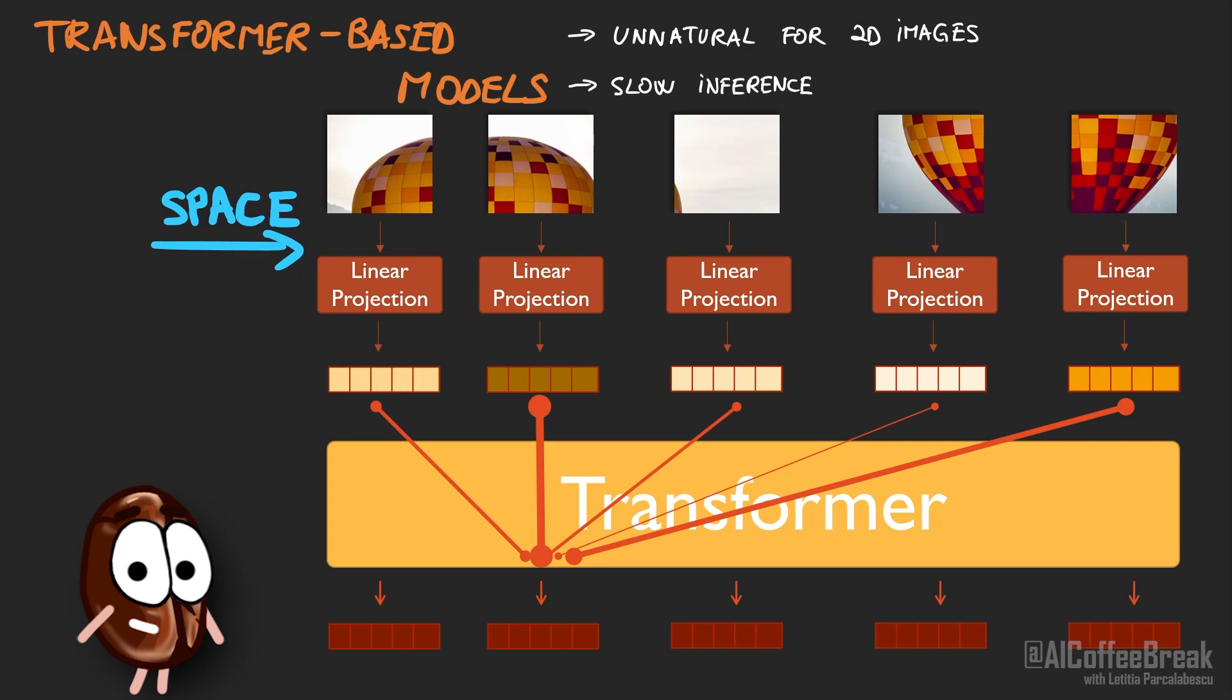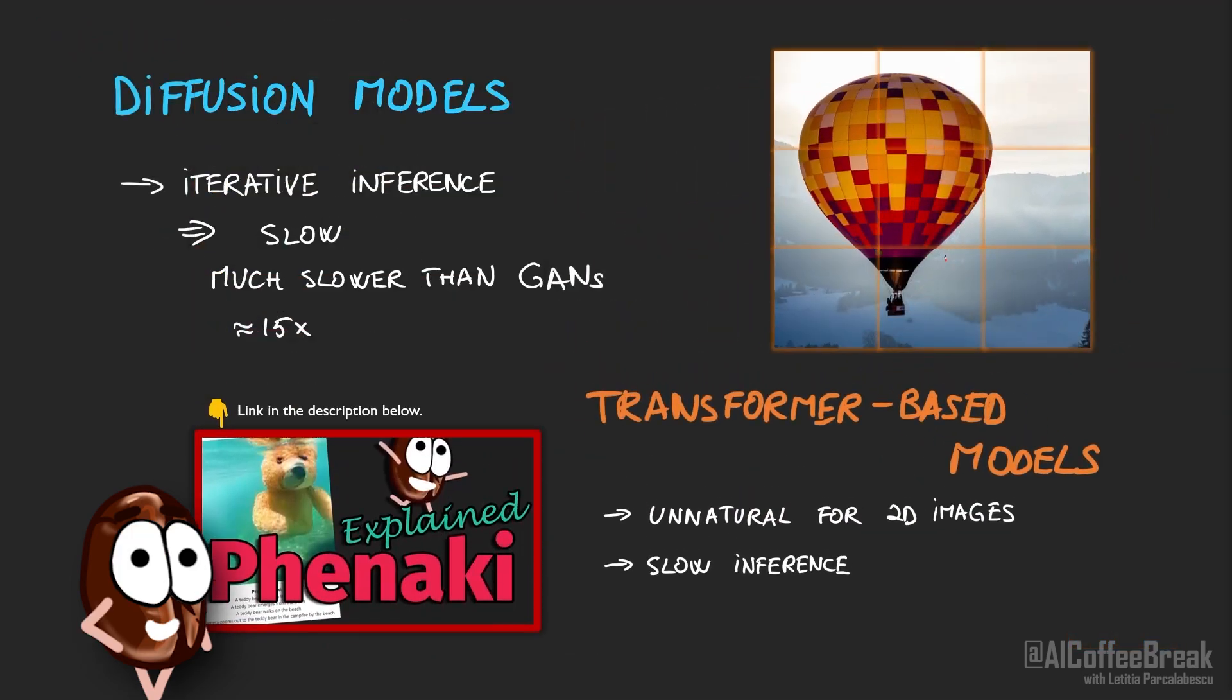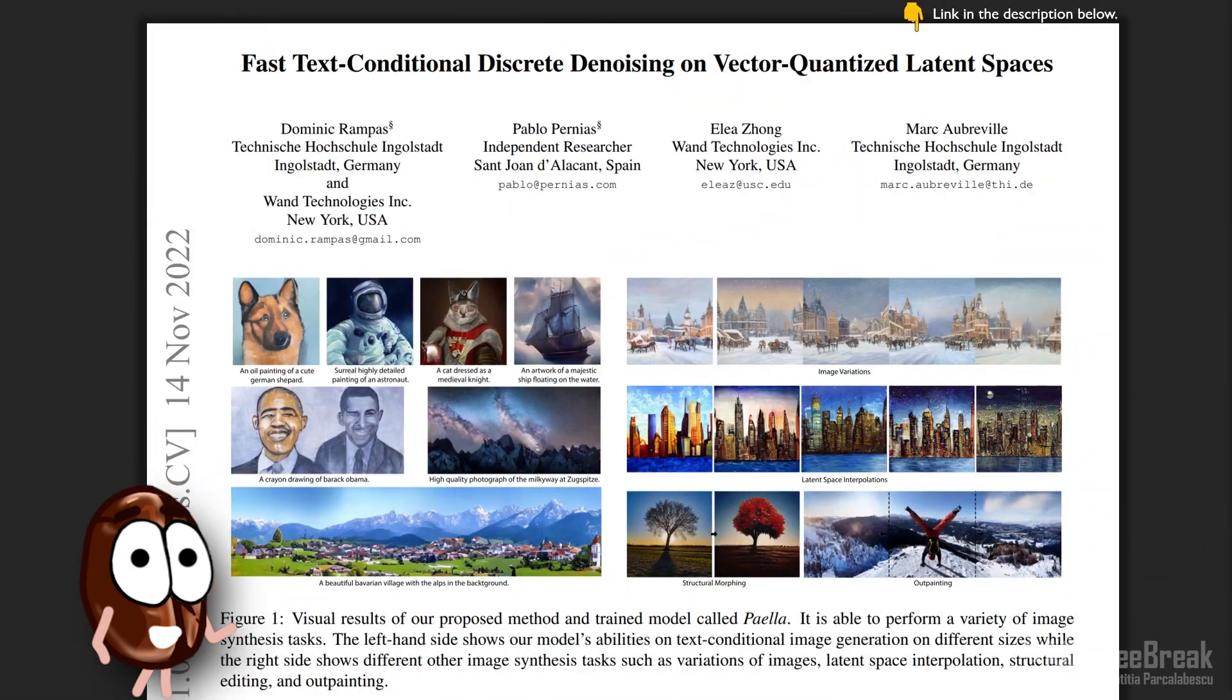To generate an image, transformers generate one such image vector at a time, which takes a while. For more details on generating not images but videos with transformers, check out our previous video on Fenaki that generates endless videos with transformers. But this paper proposes Paella,